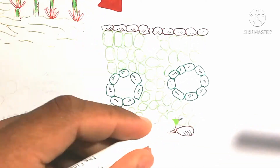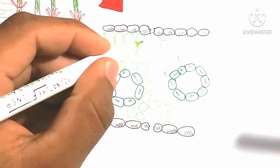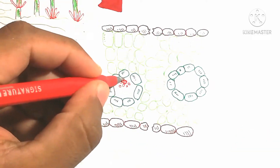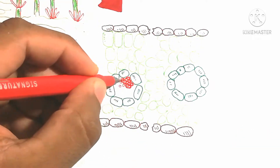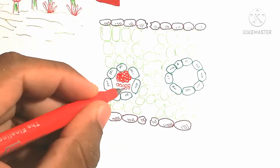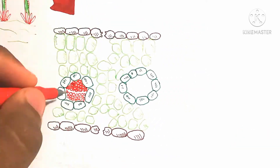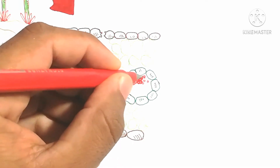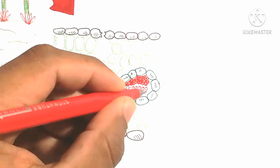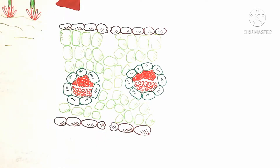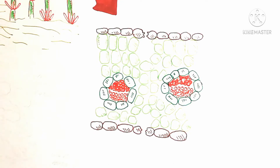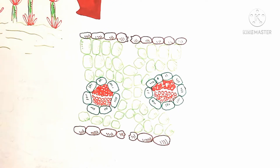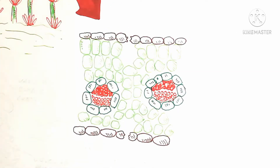Here I am drawing the cross-section of the leaf. This leaf contains bundle sheath cells and a vascular bundle, which contains the vein, xylem, and phloem.